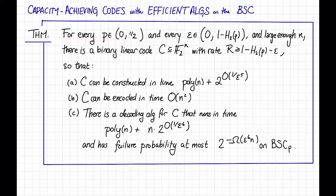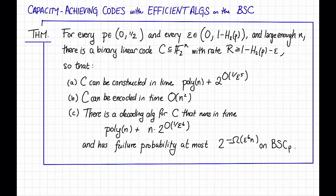For every p between 0 and a half, and for every epsilon between 0 and 1 minus the binary entropy of p — remember that this is the capacity of the binary symmetric channel with parameter p — and for any large enough n, there is a binary linear code C, subset of F_2 to the n, with rate at least 1 minus the binary entropy of p minus epsilon, so that is nearly achieving capacity on the BSC, so that the following things hold.